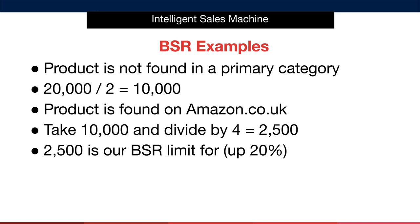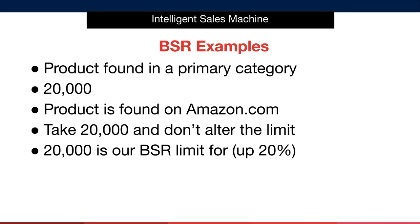This means that when assessing viability, products within a BSR of 2,500 or less will be deemed viable. We'll also allow products that go over this number by 20%, but no more. Our next example is located in a primary category, so our base BSR is 20,000. We found this product on Amazon.com, so we don't alter the limit — meaning products at 20,000 or less, or up to 20% more than 20,000, are deemed viable. Anything over that is disregarded as demand is insufficient.